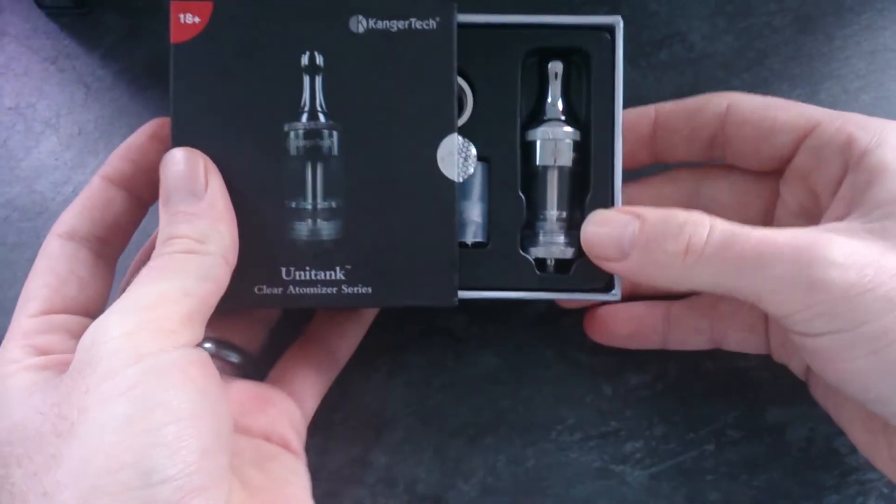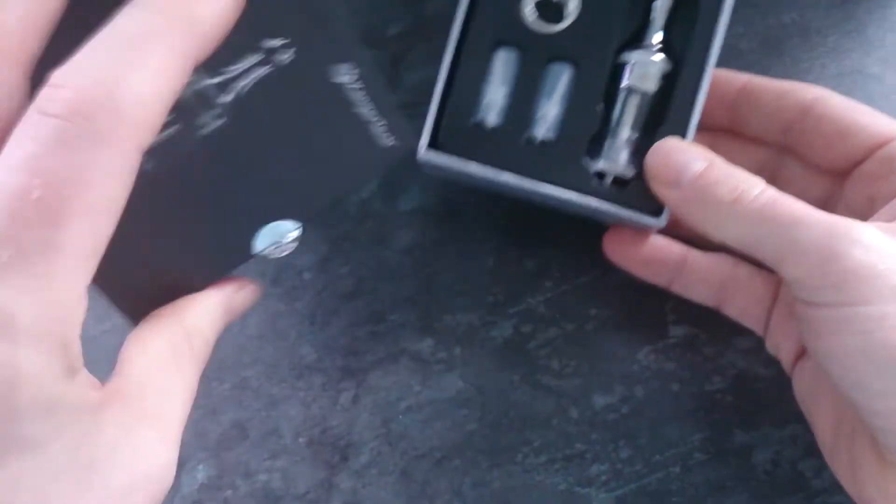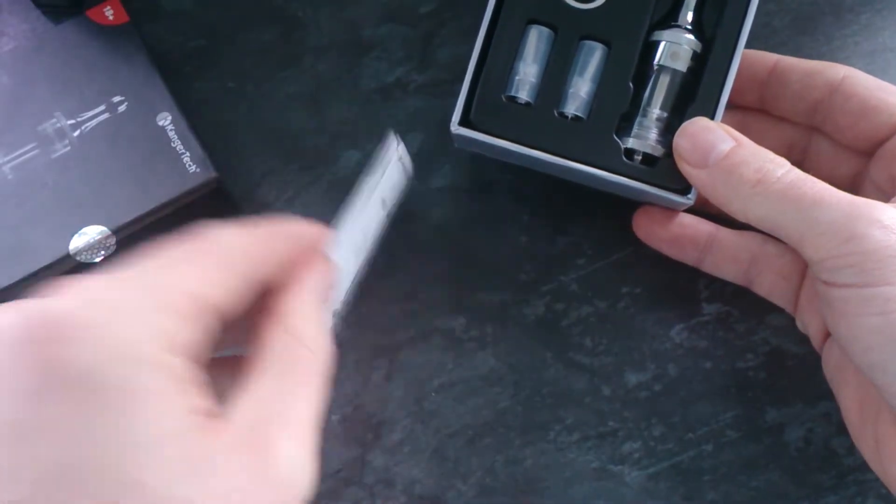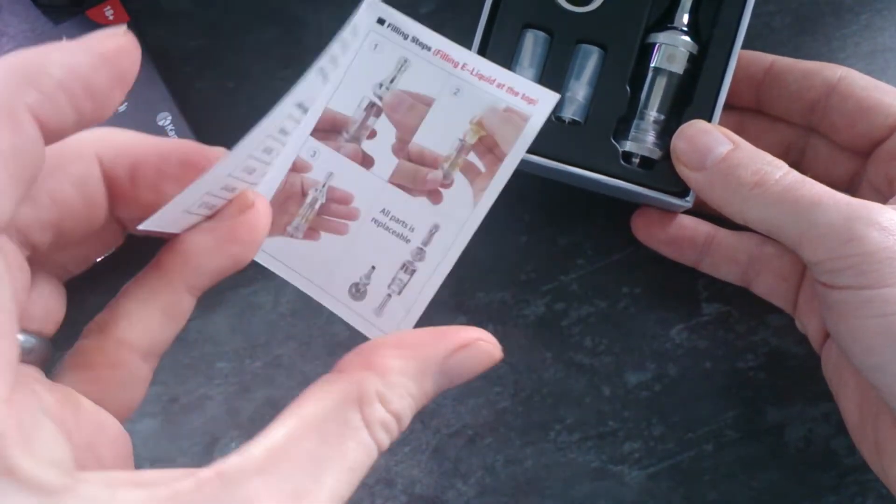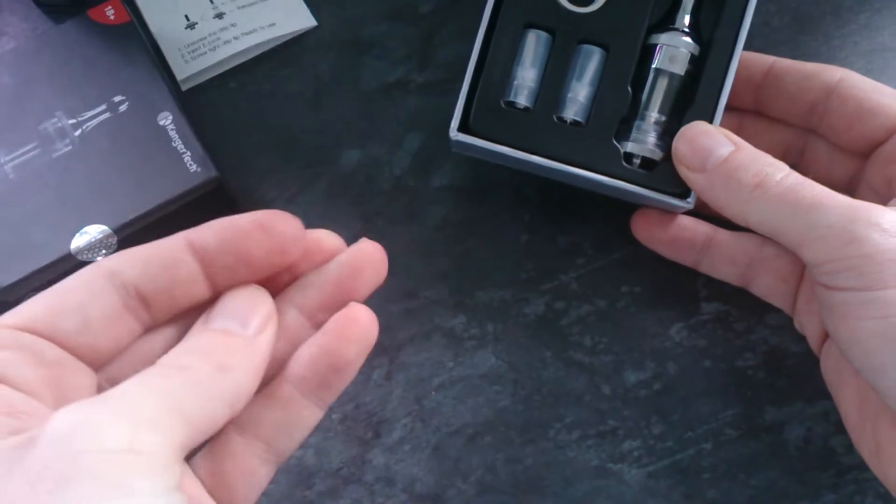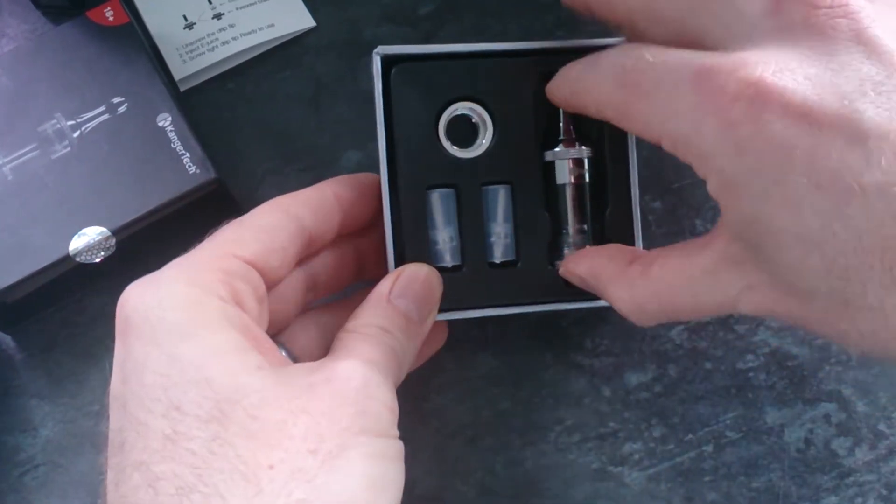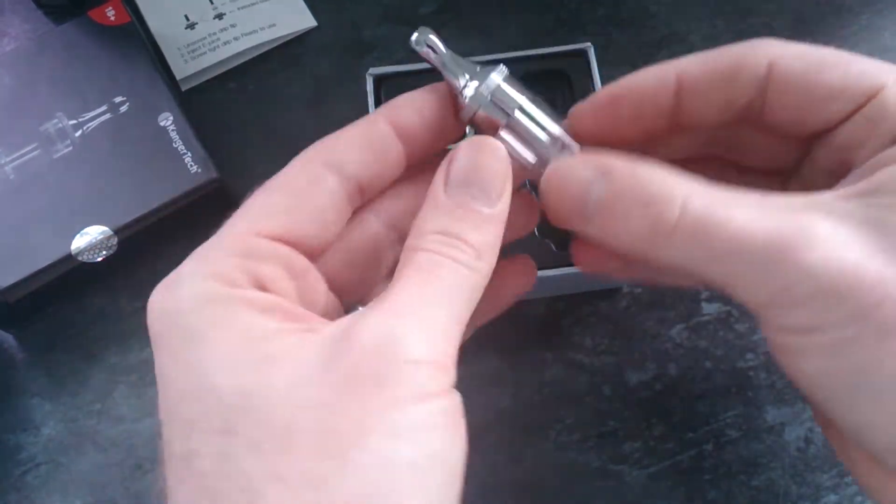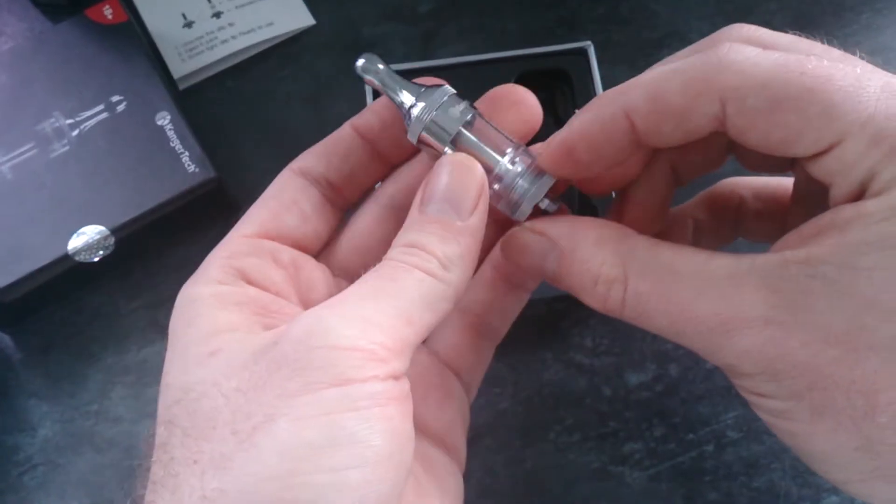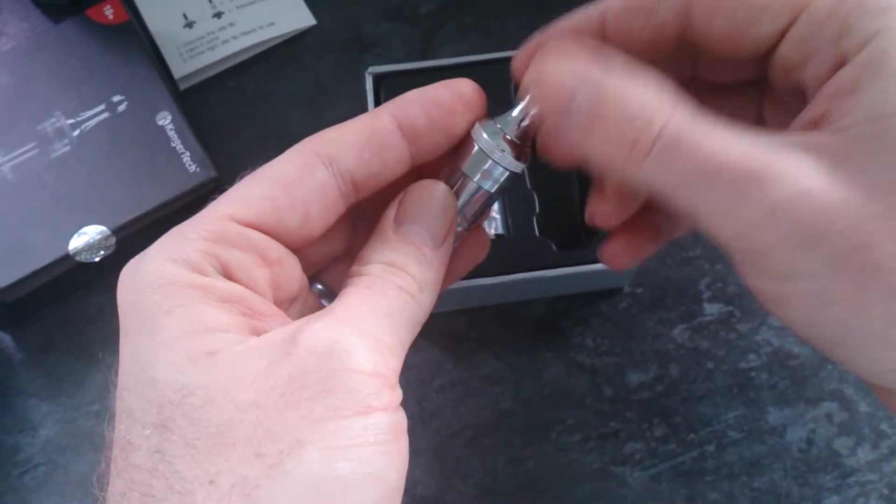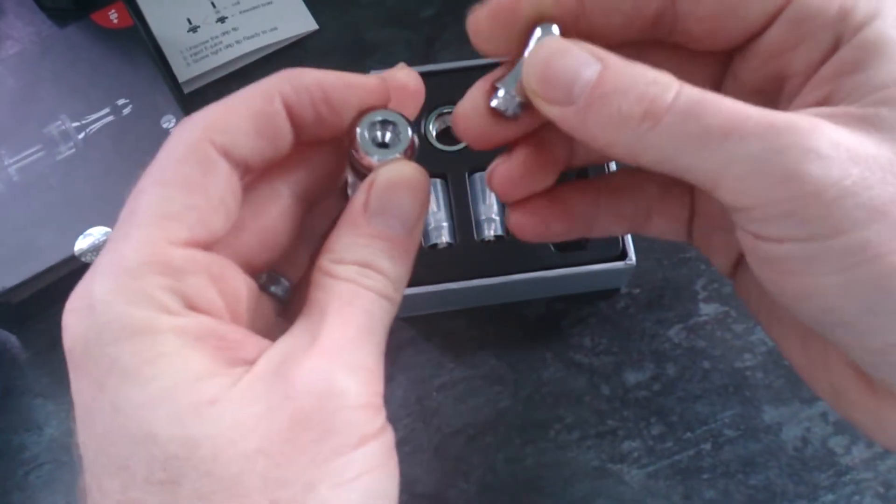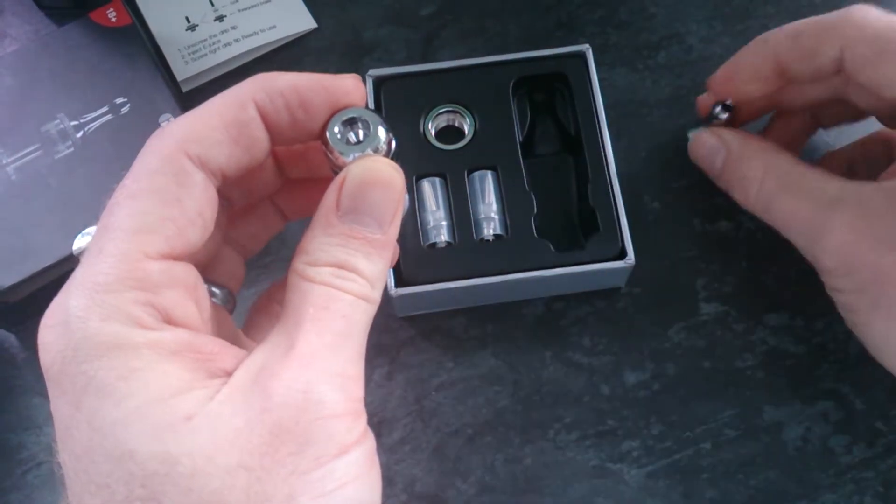This is what you're going to get: manual, we love a manual, and this is the tank. This bit is plastic. It's top filling. This is a little drip tip, you can use any one you want as long as it's the same sort of size.